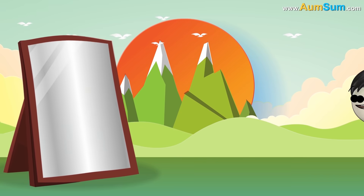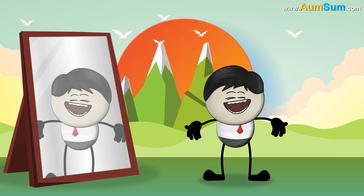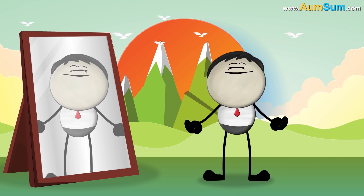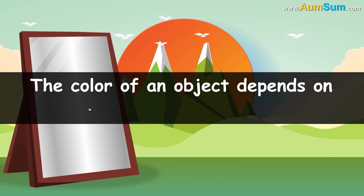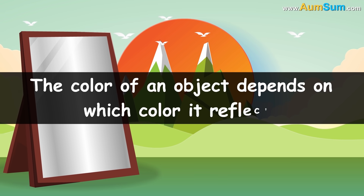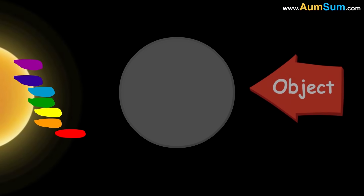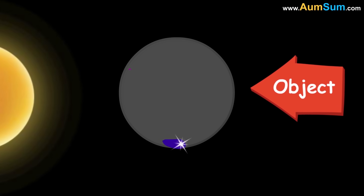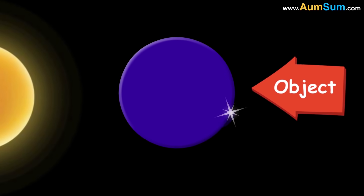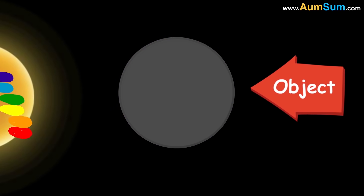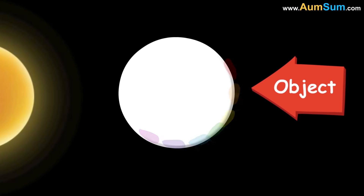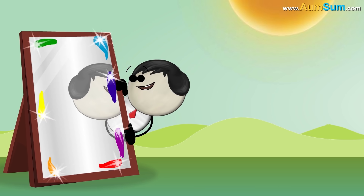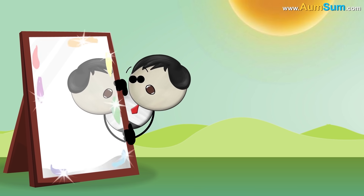What is the color of a mirror? Silver? No. The color of an object depends on which color it reflects. If an object reflects blue, it appears blue. If it reflects all colors, it appears white. Now, a mirror reflects almost all colors, so that means its color should be white.